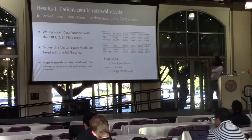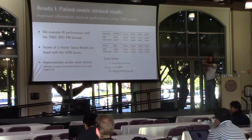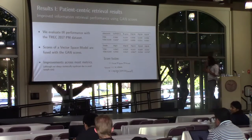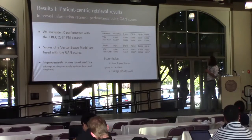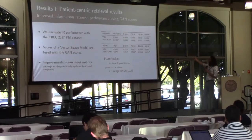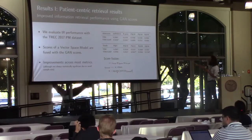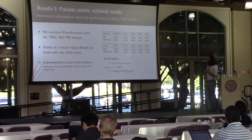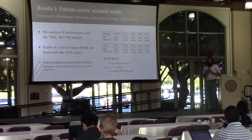I hope you can see these tables — otherwise you'll see them at the blue poster over there. We basically take a TFIDF and vector space model, and comparing that model raw versus with the output of this GAN added in a linear fusion, we can see that most metrics are improved by quite a decent margin when we add these GAN scores on top. So that was encouraging.